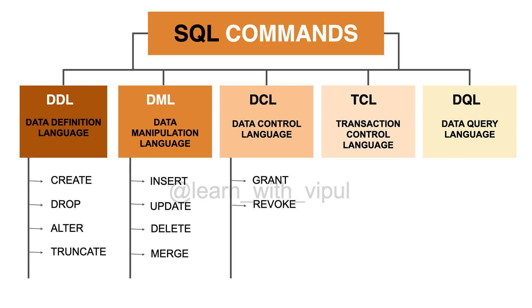The fourth category is TCL — TCL stands for Transaction Control Language. The SQL commands that manage the transactions happening in a database come under TCL. The first TCL command is COMMIT: if you have performed any transaction — let's say insertion of a new record in a table — and you want to make the changes permanent, then you can use the COMMIT command. The second command is ROLLBACK, which is used to undo the changes. Let's say you have inserted some records and by mistake performed a wrong data entry — if you want to undo those changes, you can use the ROLLBACK command.